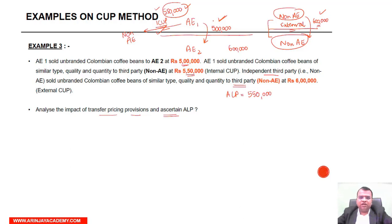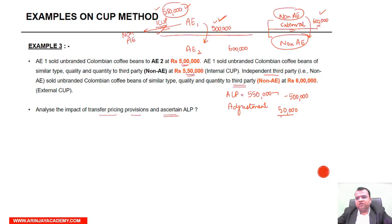Your transaction price will be rupees 5,00,000. So what will be the adjustment? The adjustment will be rupees 5,50,000 minus rupees 5,00,000 — in other words, rupees 50,000 — as the transfer pricing adjustment.